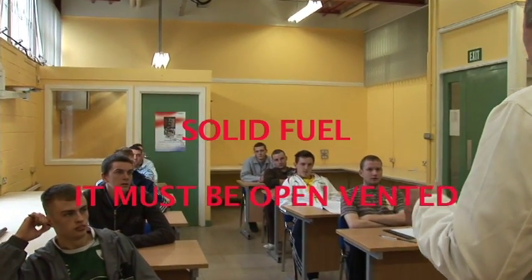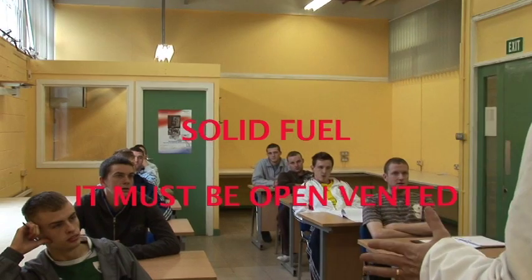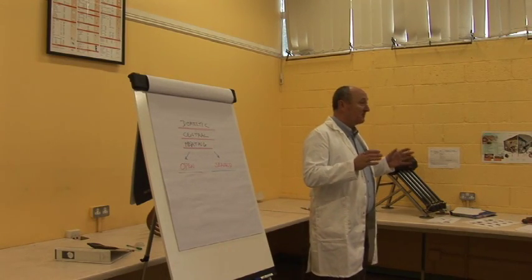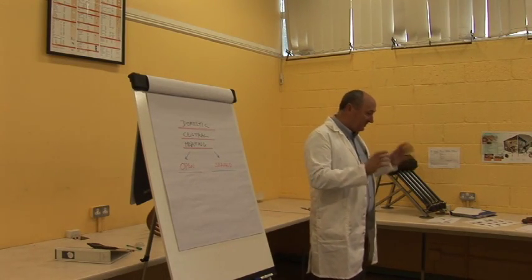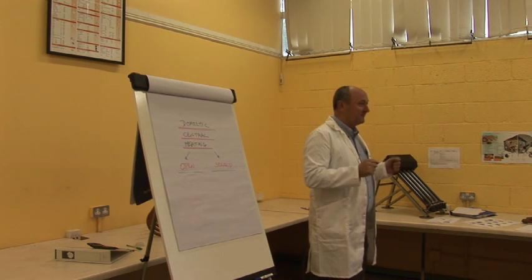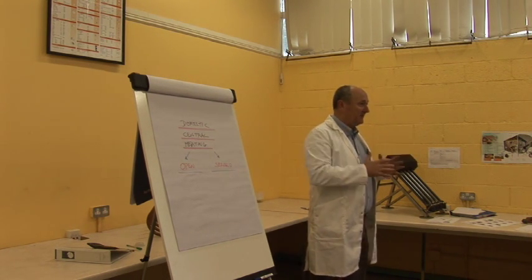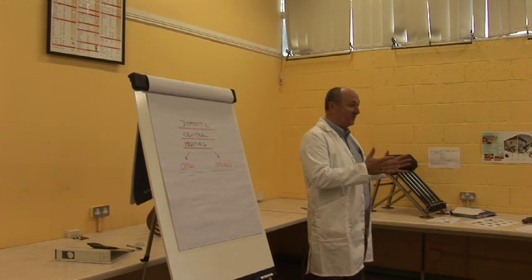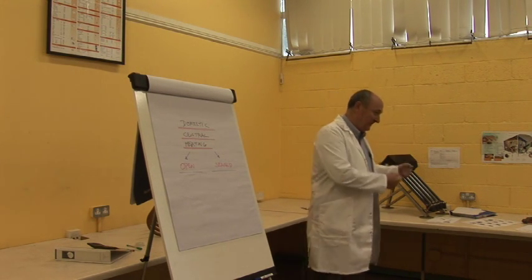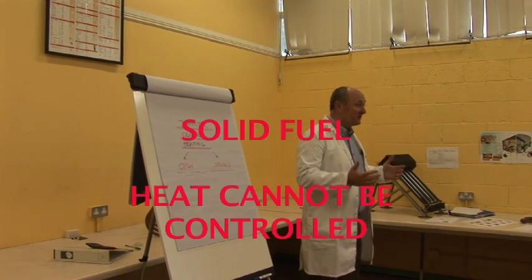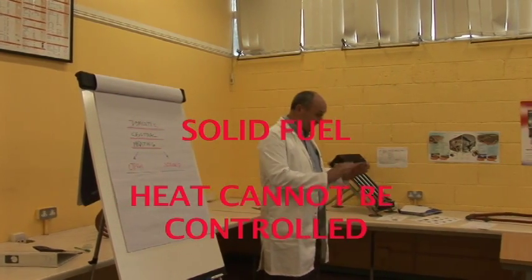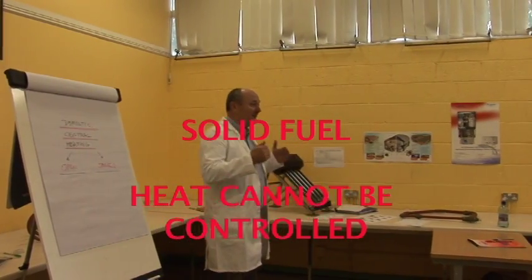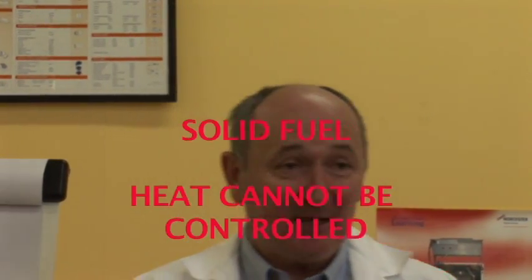On the open vented system, you must have a gravity circulation. What gravity means is that when somebody lights the fire, the heat has to be able to get away safely — nothing aiding it. You can't depend on a pump or electrics, because with solid fuel if somebody keeps putting on material it will just keep taking it. So you have to build in a gravity circuit.